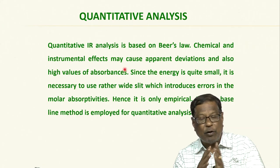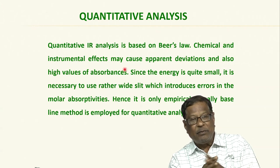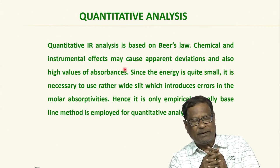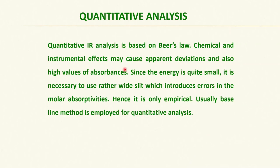This is one type of quantitative analysis we use in process instruments. If you want to do quantitative analysis of infrared for a given specific system in the laboratory, it is just like what we do in a spectrophotometer. Quantitative IR analysis is based on Beer-Lambert's law. Chemical and instrumental effects may cause apparent deviation.